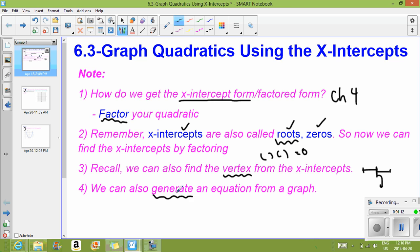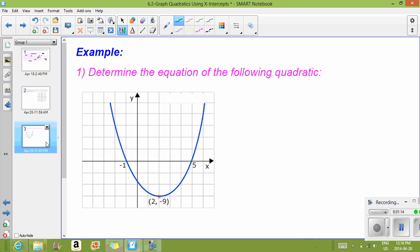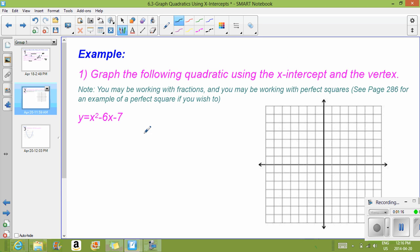We also should be able to go backwards and if given a graph, be able to generate the equation, and that will be example 3 right here. So if we stick with our example, first example, we have this quadratic right here.